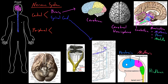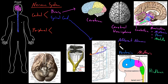Neurons that bring information in to the central nervous system are called afferent neurons. Other neurons have axons that carry information in the opposite direction — away from the central nervous system out into the periphery. Neurons whose axons carry information away from the central nervous system are called efferent neurons.